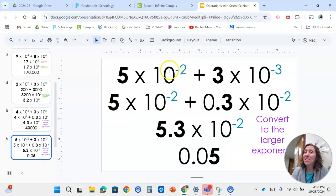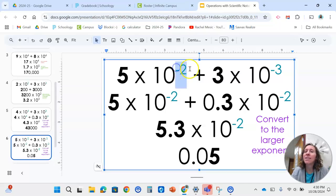Let's try this one. These ones are negatives, so be very careful. The one closer to zero is the bigger number. So negative 2 is the bigger number. We're going to keep that one and convert this one to have a negative 2 exponent. So we're shifting the decimal one to the left and making the exponent one greater. Then we can add 5 and 0.3 together to get 5.3 × 10⁻². And then we can convert that to standard form.